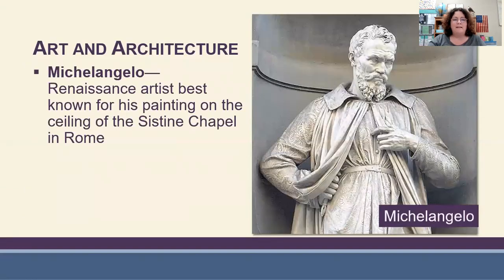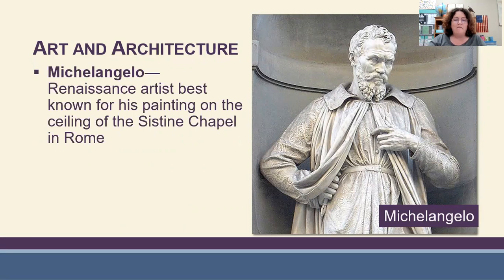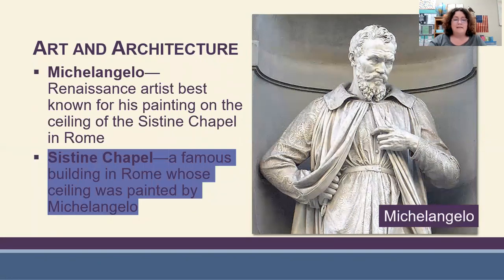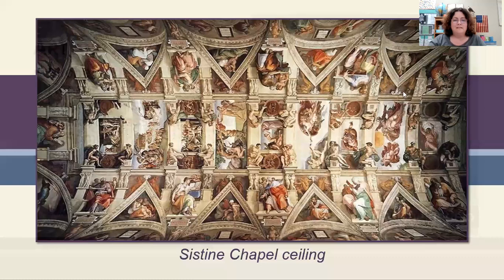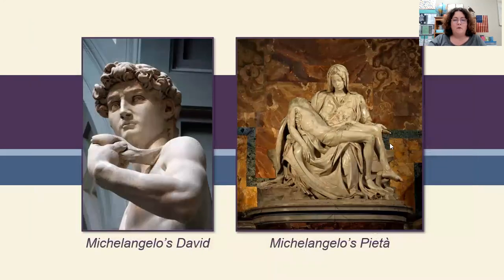The other great artist was Michelangelo, best known for his painting of the ceiling of the Sistine Chapel in Rome. He spent four years laying on his back on a scaffolding painting that ceiling. The Sistine Chapel is a famous building in Rome whose ceiling was painted by Michelangelo. These pictures show the Sistine Chapel and some other sculptures done by Michelangelo.